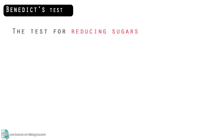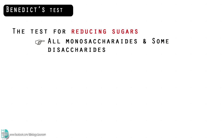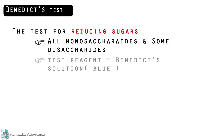The test for reducing sugars is known as Benedict's test. All monosaccharides are reducing sugars, and some disaccharides too, such as maltose. The test reagent used is called Benedict's solution — it is a blue colored solution.